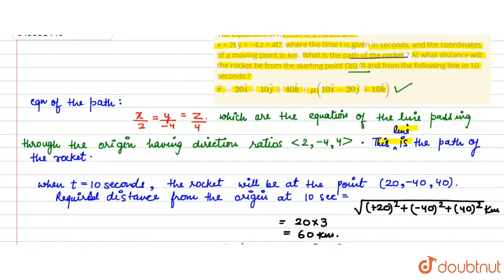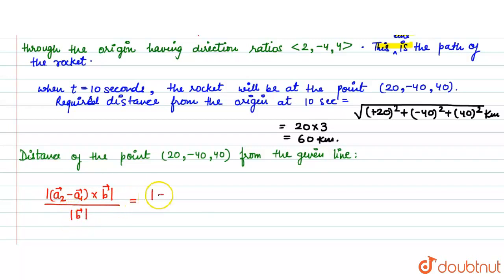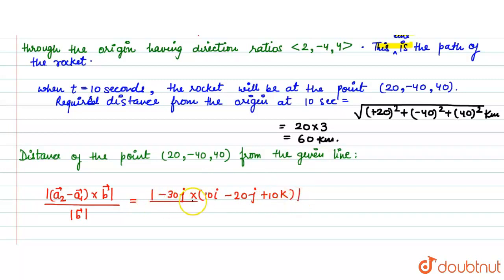So now we write: the distance from the given line can be written using the formula |(a₂ - a₁) × b| / |b|. Now let's put in the values. We have the vector (a₂ - a₁) and we cross it with b = 10i - 20j + 10k. The denominator is |b|, so we substitute: 10i - 20j + 10k.